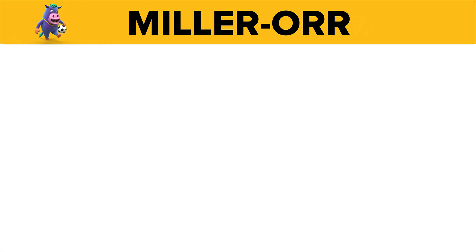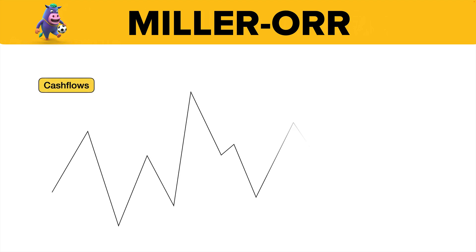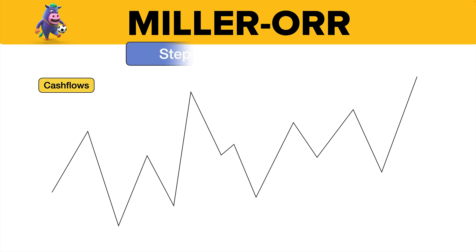Let's have a look at something called the Miller-Orr model. What it does is it accepts that cash flows don't just go in a straight line up or a straight line down — there's variability of cash flows. So how much cash we should hold, the Miller-Orr model tries to allow for that variability.